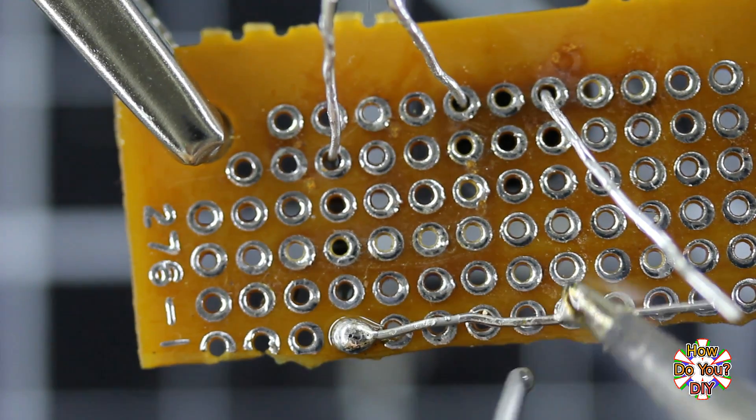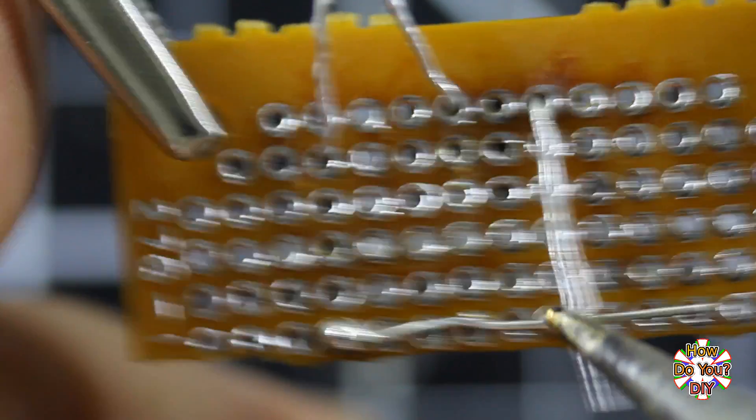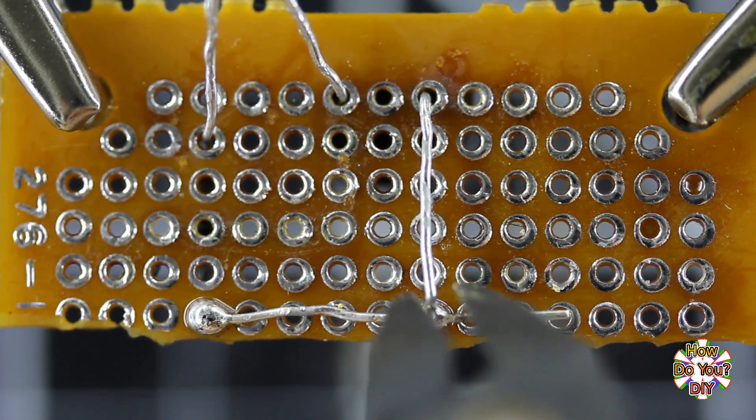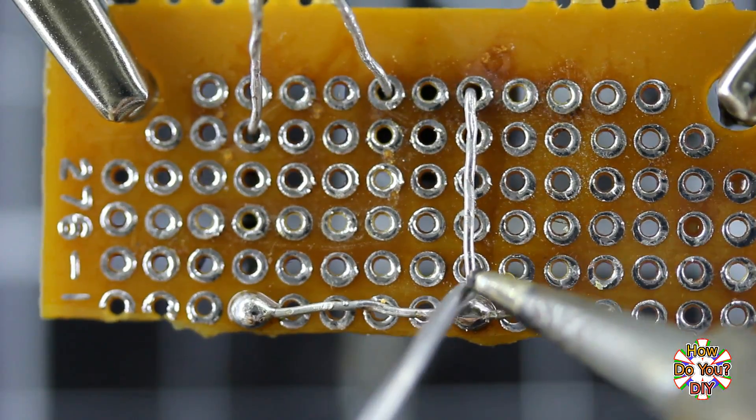If you need to connect two leads that are crossing like this, I recommend trimming one down before soldering them together. If you trim it a bit short, that's okay because you can easily add enough solder to join them.